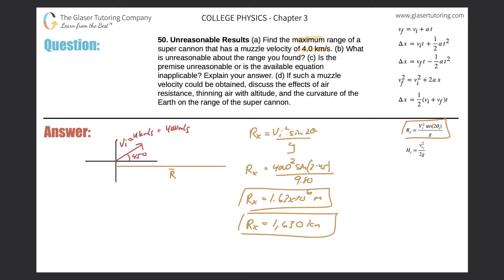Is this unreasonable? Well, let's think about the Earth. It has a radius of about 6,000 kilometers. So what fraction is this range of the radius? 1,630 divided by 6,000 is about 27% — almost 30%. So that means if we're at the top of the Earth, we would have shot the cannon about that far.